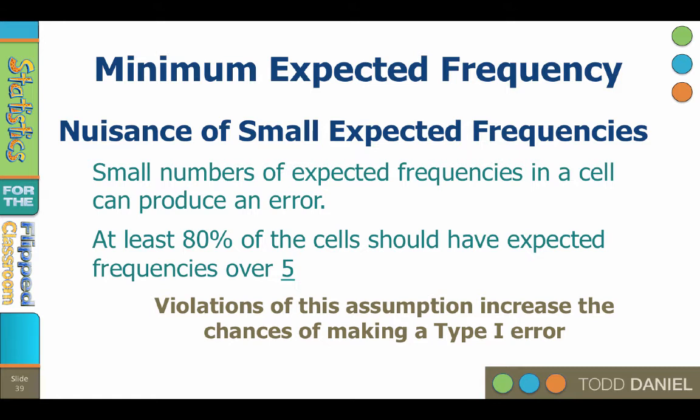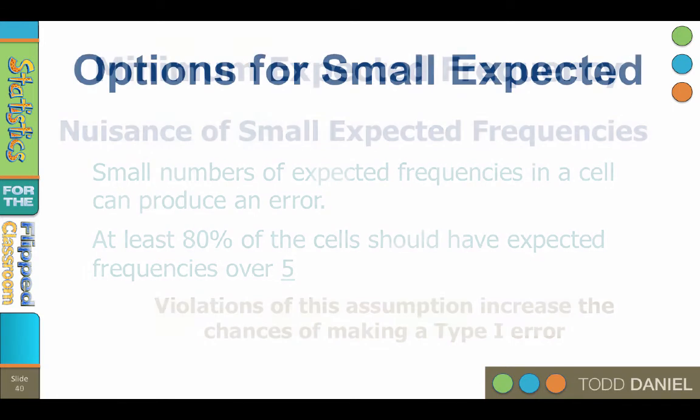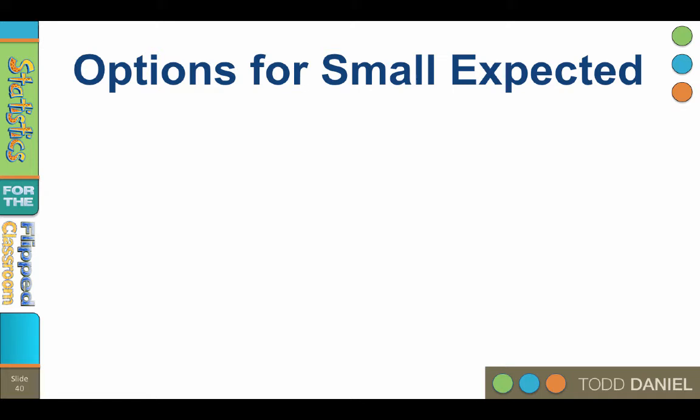So what can you do if your expected frequencies are too small? You have options. When you have too small expected frequencies, the best option is to collect more data. Fundamentally, you have too small of a sample size and you need more data. Ideally, you don't wait until you have this problem before you address it — plan your data collection for this contingency to make sure that you will have enough participants.